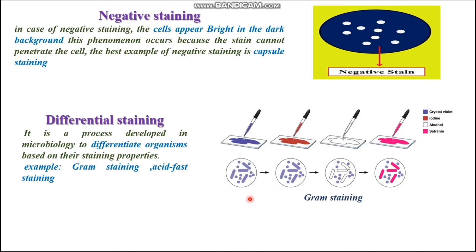Here is an overview of the differential staining process using gram staining. We take a slide containing a bacterial smear and introduce crystal violet dye, making all the bacteria look completely violet. After that, we use a mordant — iodine — to fix the dye with the cells more strongly. Then we wash the slide with alcohol. At this stage, some bacterial cells become colorless and some remain violet. Gram-negative bacteria with a thin cell wall lose the stain, while gram-positive bacteria with a thick cell wall retain the stain.